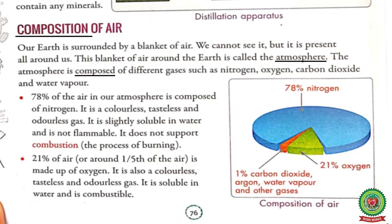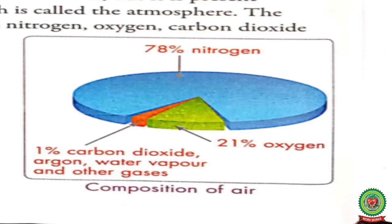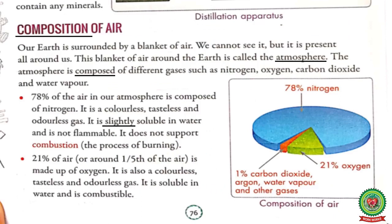Number one is nitrogen gas. 78% of the air in the atmosphere is composed of nitrogen. Students, see the diagram given in your book. This blue part shows that 78% of nitrogen is present in earth's atmosphere. It is a colorless, tasteless and odorless gas — that is, this gas does not have any color, taste or smell.